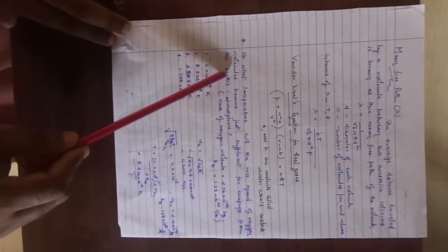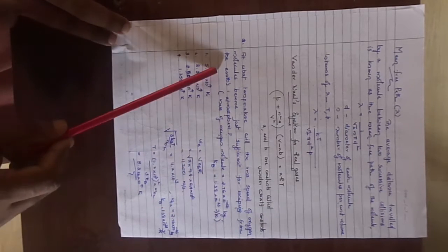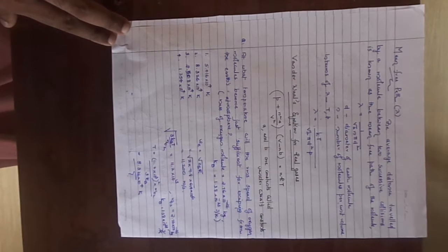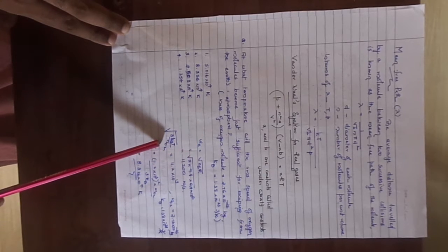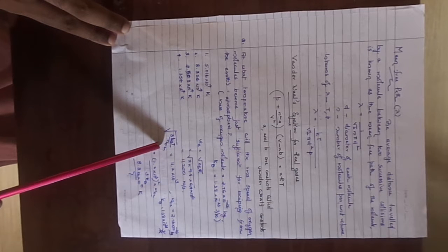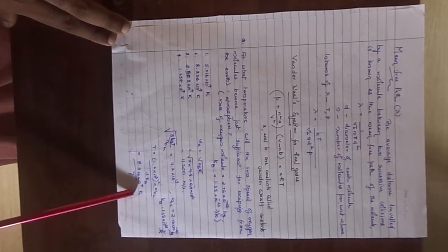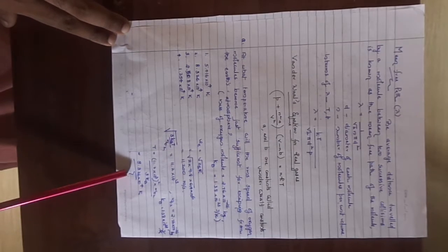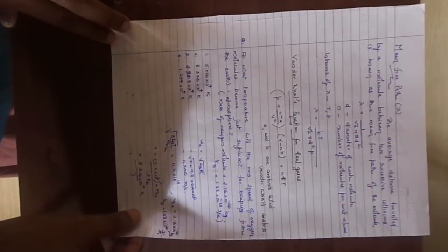Look, one question. At what temperature will the rms speed of oxygen molecules become just sufficient for escaping from the earth's atmosphere? You know the expression for the escape velocity and also for the root mean square speed. And you just compare it and you get the value for temperature as equal to 8.326 into 10 raised to 4 kelvin. So that is a very good question.